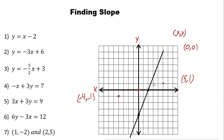To find the slope of a line, you need either the equation of the line or two points on the line. If you have two points, let's find the ordered pairs. Call this point A and this point B.